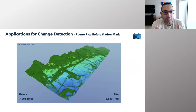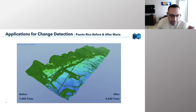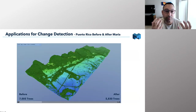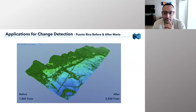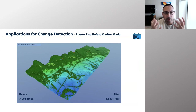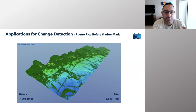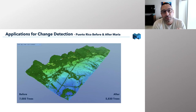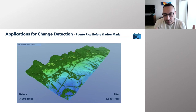Another example is change detection. Using the same kind of data from Puerto Rico, we have a before and after scene — before Hurricane Maria and then after Hurricane Maria. As well as being able to visualize the change, we can actually count what's happened. At the moment we've been counting trees, but in the future we have the ability to look at damage to buildings as well — not just the removal of an object, but the damage to an object. Really interesting use cases.